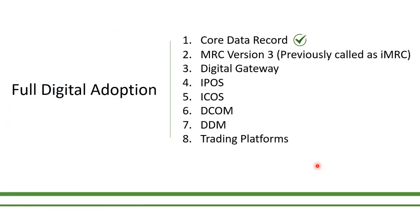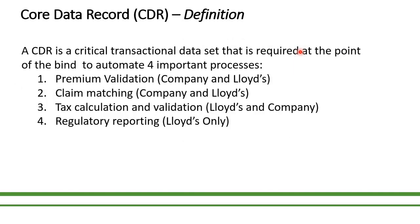We have started with full digital adaptation services. In this category, we have a total of eight services, and currently we are covering Core Data Record, or CDR. In my last video presentation, we talked about the ways through which the CDR can be assembled and submitted to the digital gateway.